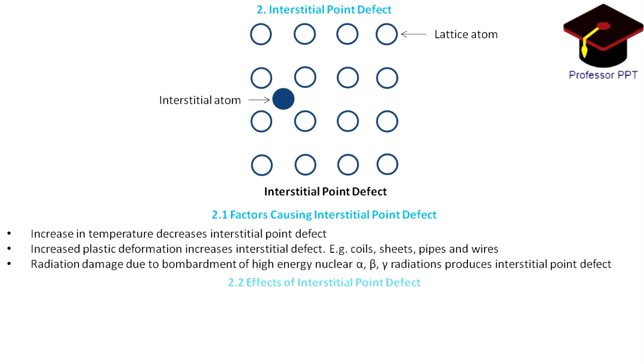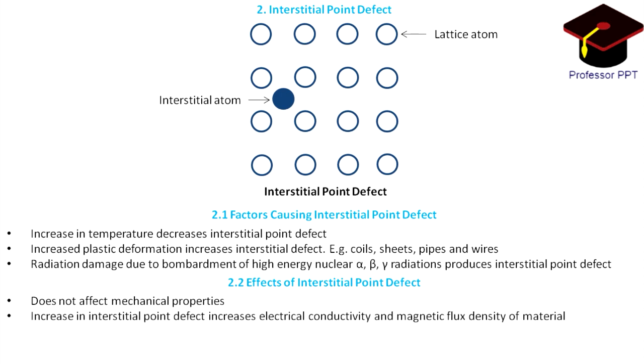Let us discuss the effects of interstitial point defect. It does not affect the mechanical properties of a material but affects properties like electrical conductivity and magnetic flux density in case of a conductor and transformer core of a material, i.e., increase in interstitial defect increases electrical conductivity and magnetic flux density.